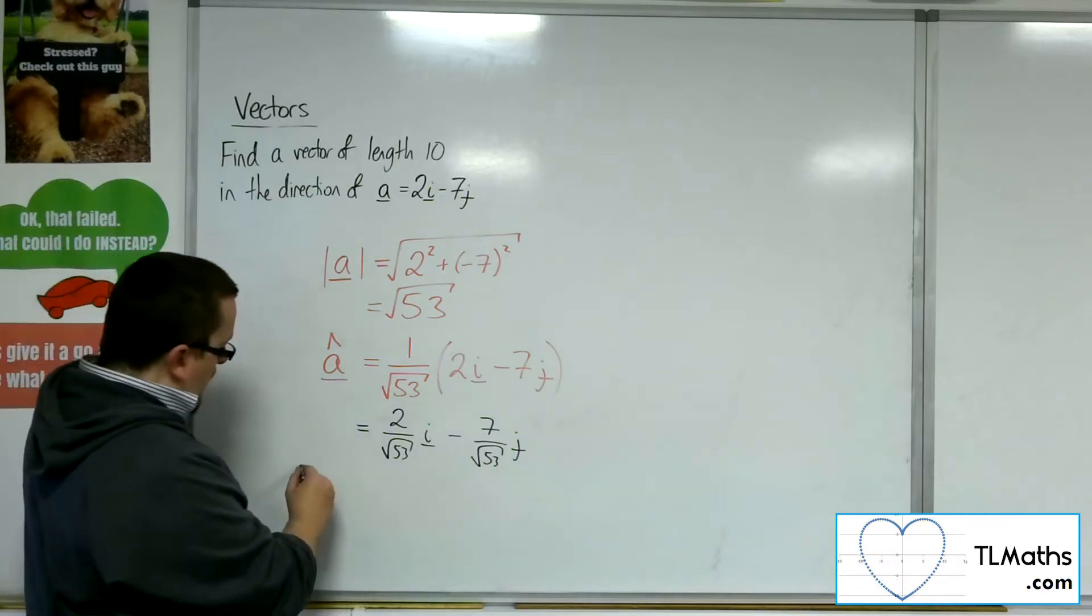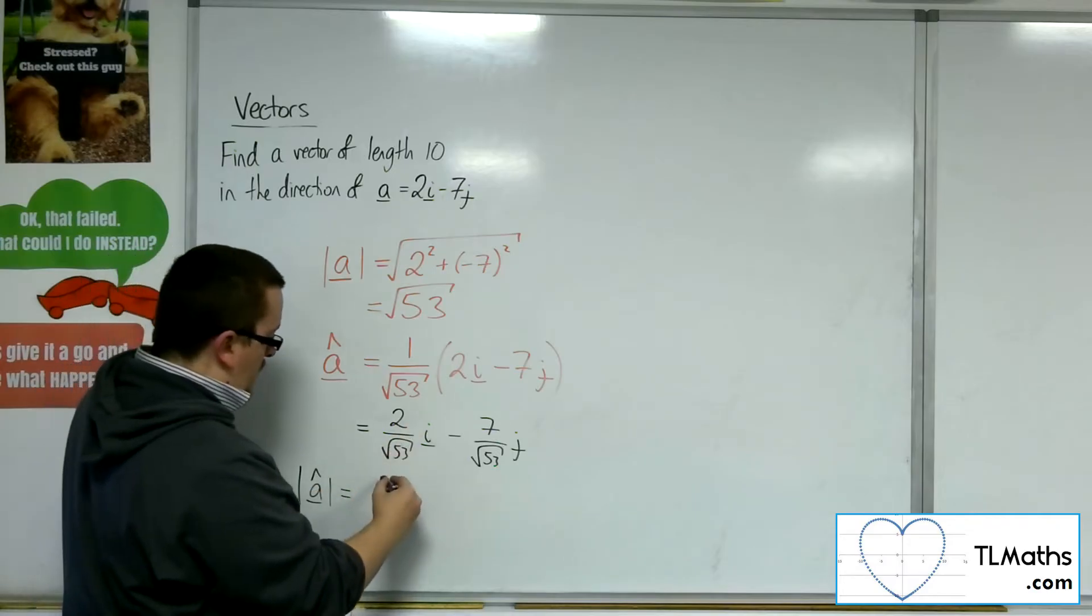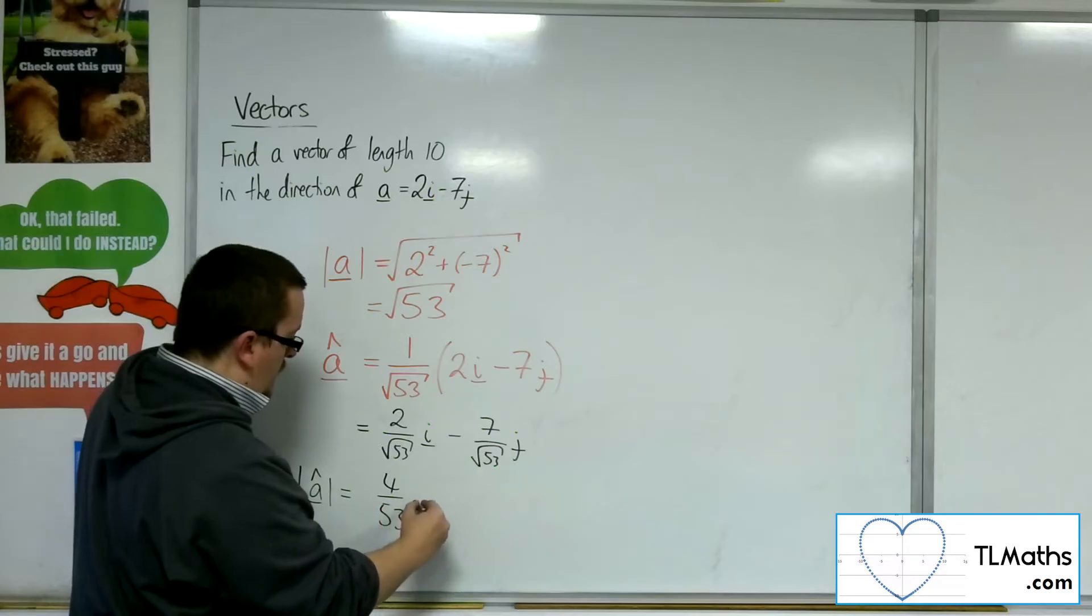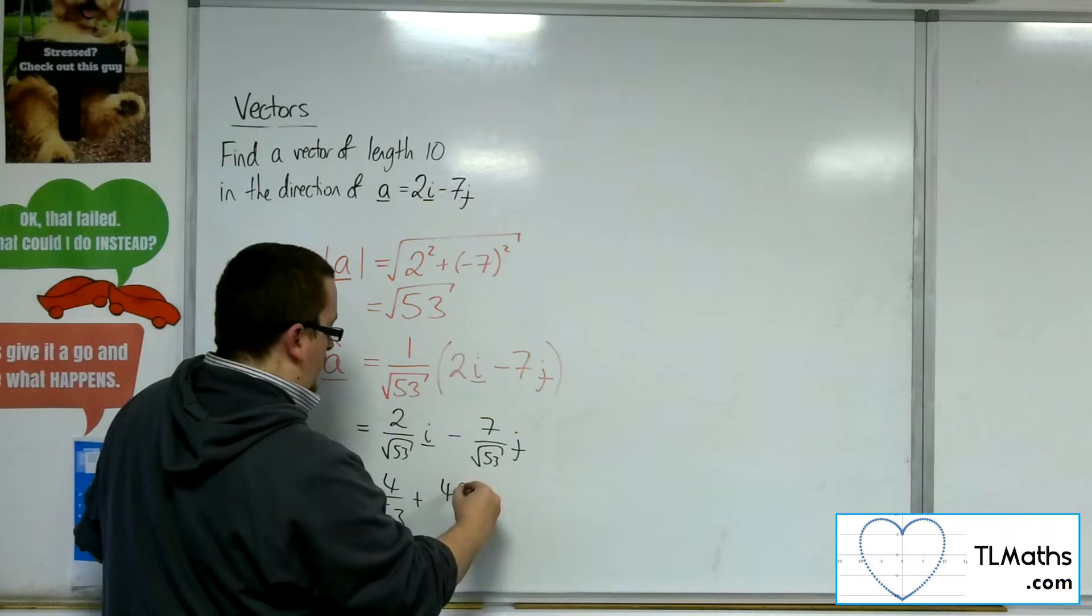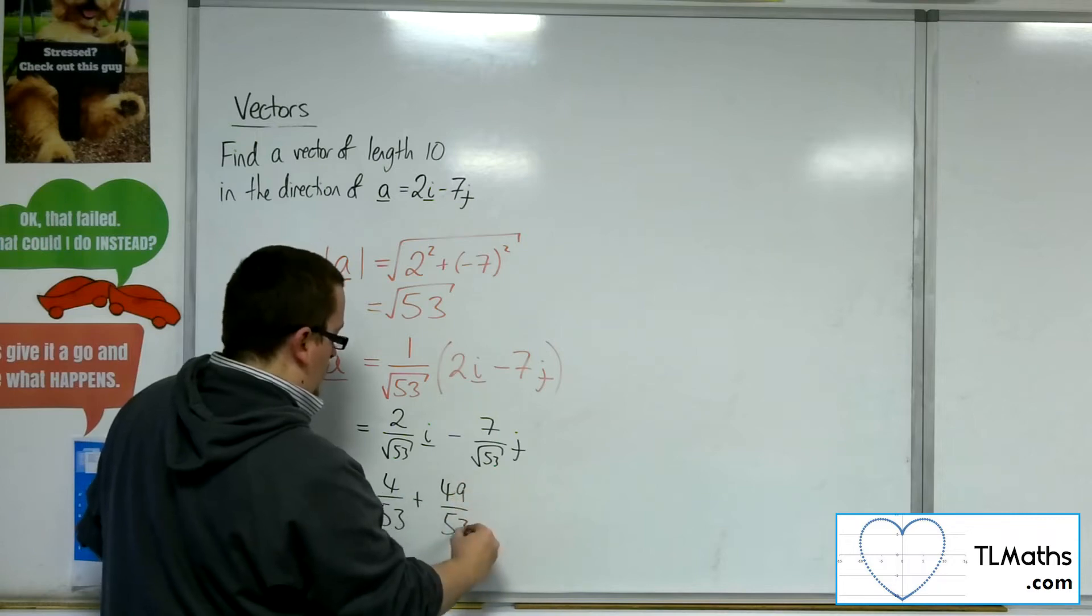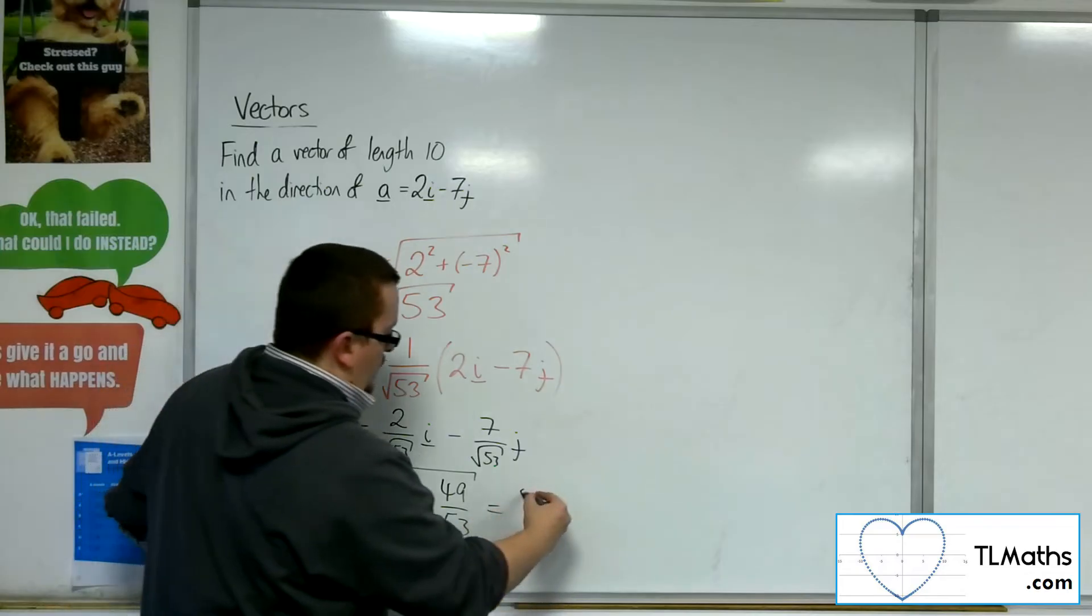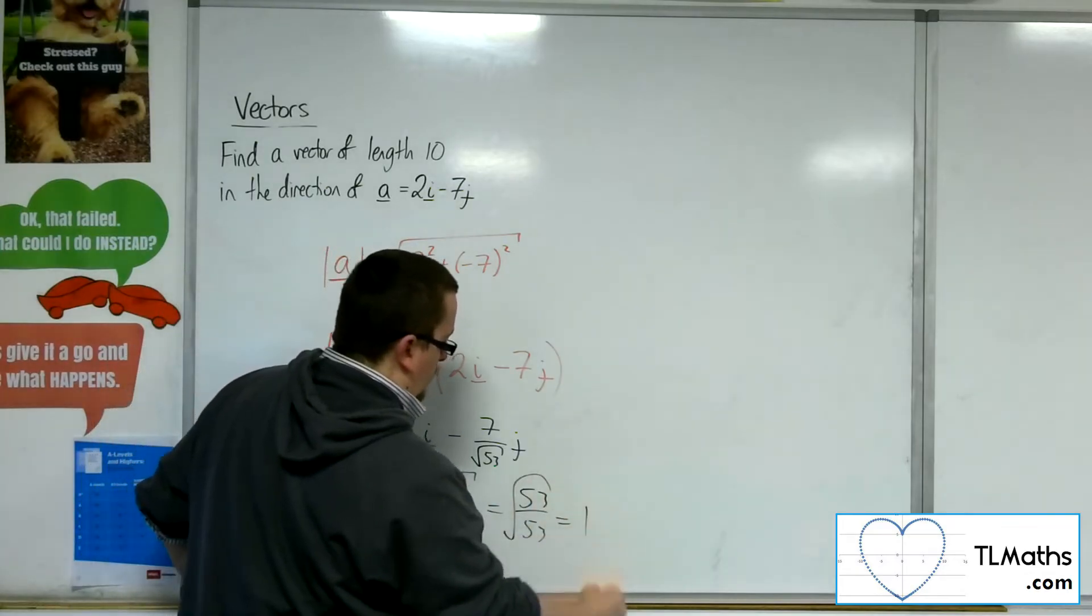Now, if I wanted to find the length of that vector, well, it would be this squared, so 4 over 53, plus this squared, so 49 over 53, square rooted. So that would just be 53 over 53, square rooted, so square root of 1, which is 1.